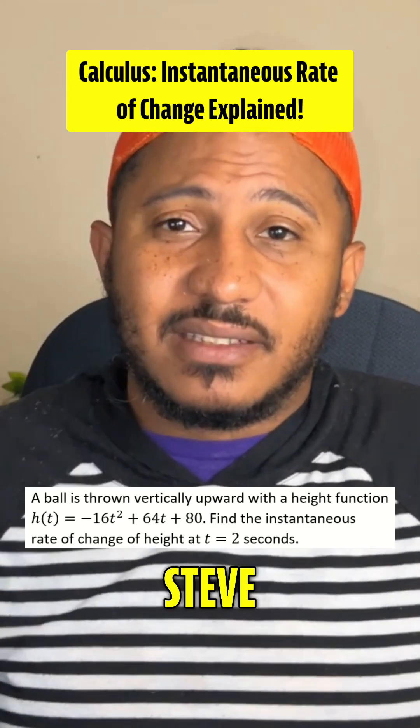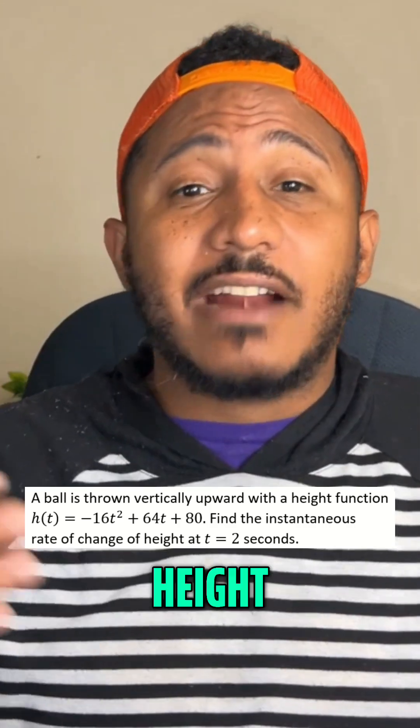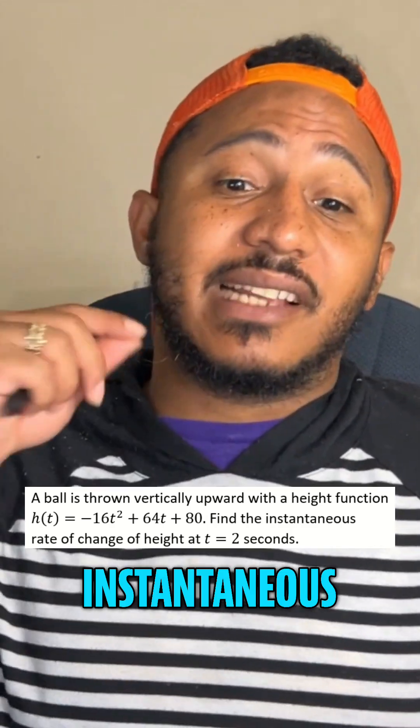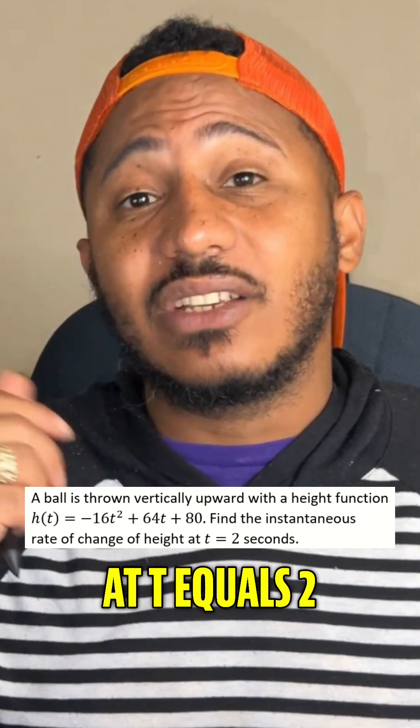Calculus time, here we go. This is the Math Guy, Steve. If a ball is thrown vertically upward with a height function h(t) = -16t² + 64t + 80, find the instantaneous rate of change of height at t = 2 seconds.